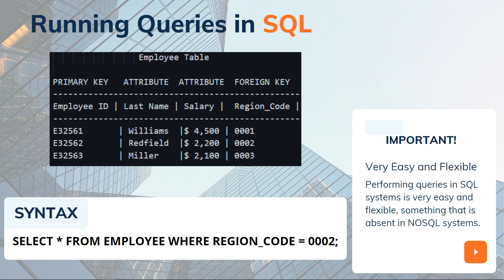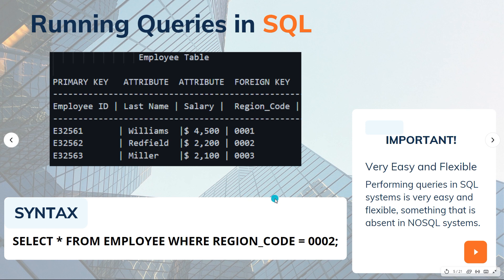For example, if we want all employees with region code 0002, the syntax would be: SELECT * FROM employee WHERE region_code = 0002. The asterisk means everything. This resembles filtering in an Excel sheet. Running queries in SQL is really flexible and easy — something that doesn't exist in NoSQL systems, which we'll talk about later.